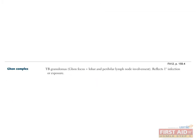The Ghon focus is the primary site of M. tuberculosis infection in a lung, generally located in the lower portion of the upper lobe or the upper portion of the lower lobe. The Ghon focus is only visible on chest x-ray if the site has calcified or grown substantially. Another sign of primary infection on chest x-ray is the presence of Ghon complexes, which consist of a Ghon focus and lobar perihilar lymph node involvement.